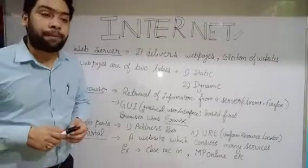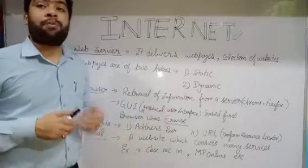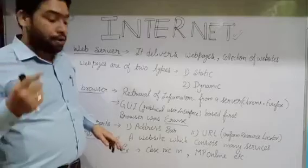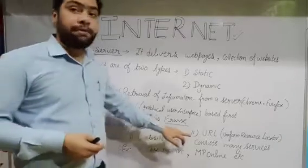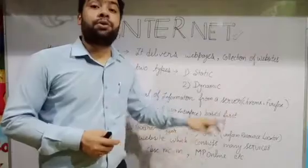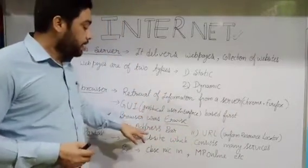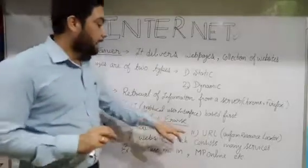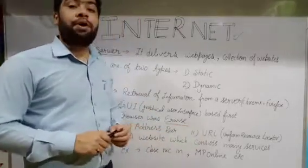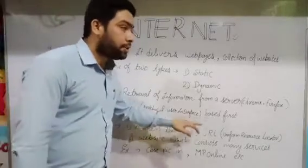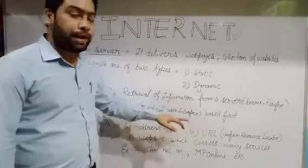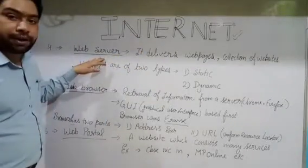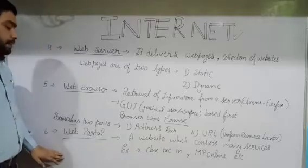A browser has two main parts. When we open a browser like Chrome, it has: first, an address bar — the place where we enter the website address; and second, a URL — Uniform Resource Locator — which is the service provided by the browser to find web pages from the web server.